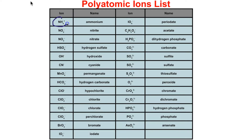You should probably start to know that NH4+ is ammonium, that NO2- is nitrite, and that NO3- is nitrate. If you memorize these, then writing the chemical formulas and naming compounds containing polyatomic ions will be a breeze.